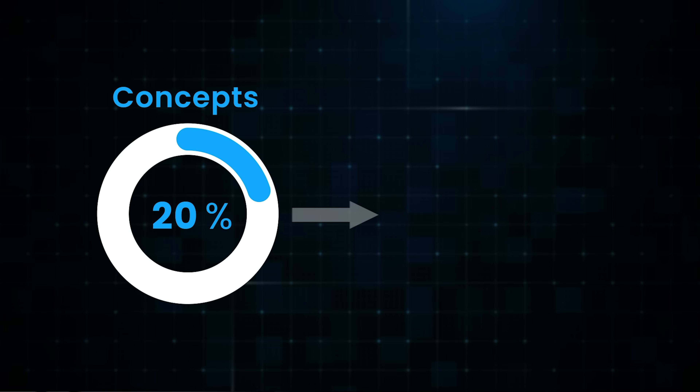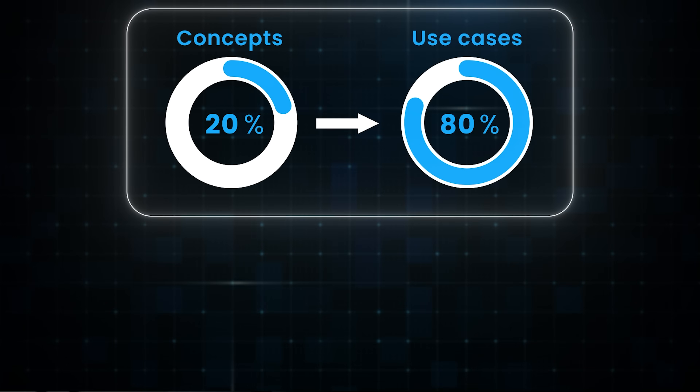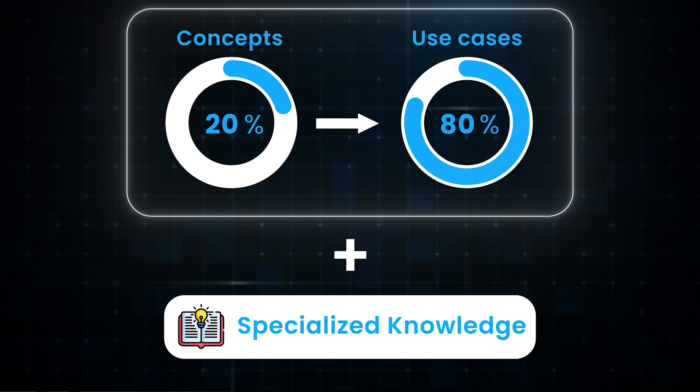If you're a complete beginner, you might think that you need to learn everything. That's the biggest mistake people make — they try to learn everything at once and end up learning nothing. So here is what we will do: start with the 20% that covers 80% of the use cases, then layer on specialized knowledge based on your career goals.